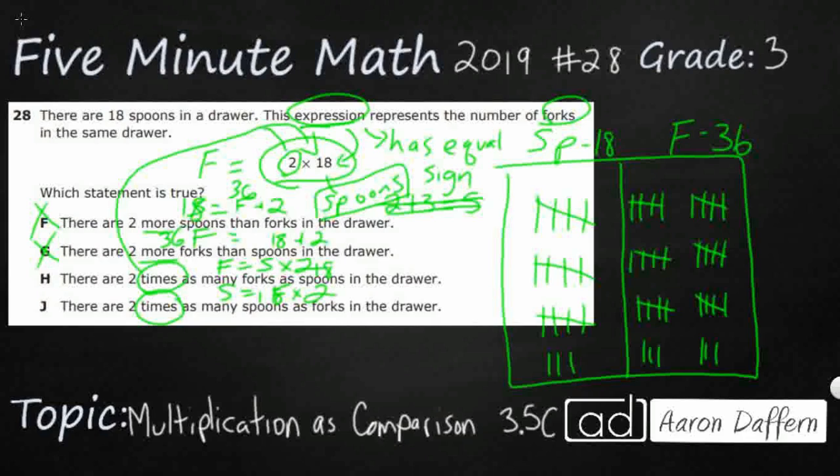So let's see what we have here. Our forks, remember, is 36. I'm going to look at H. So 36 equals our spoons of 18 times 2. Yes, that is going to be our answer because J has got that flipped. So the answer is H.